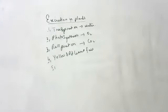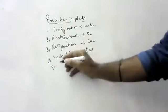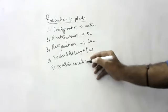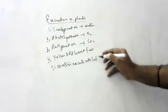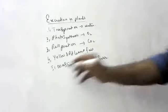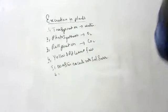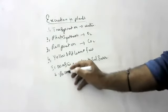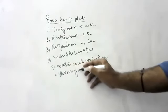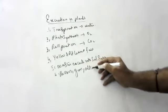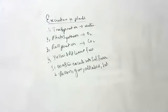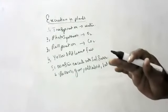Plants also excrete in some ways — substances will fall down in nature. Some ways they will excrete into the soil surrounding them, and some secretions like that. What are some famous excretions of plants which we can consider as excretion?